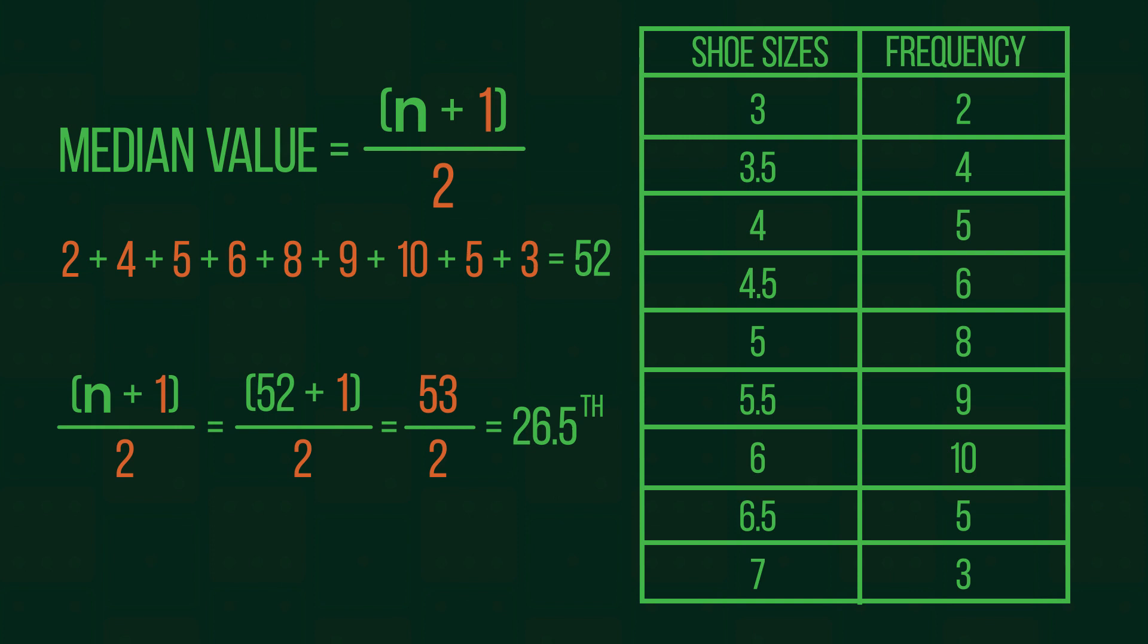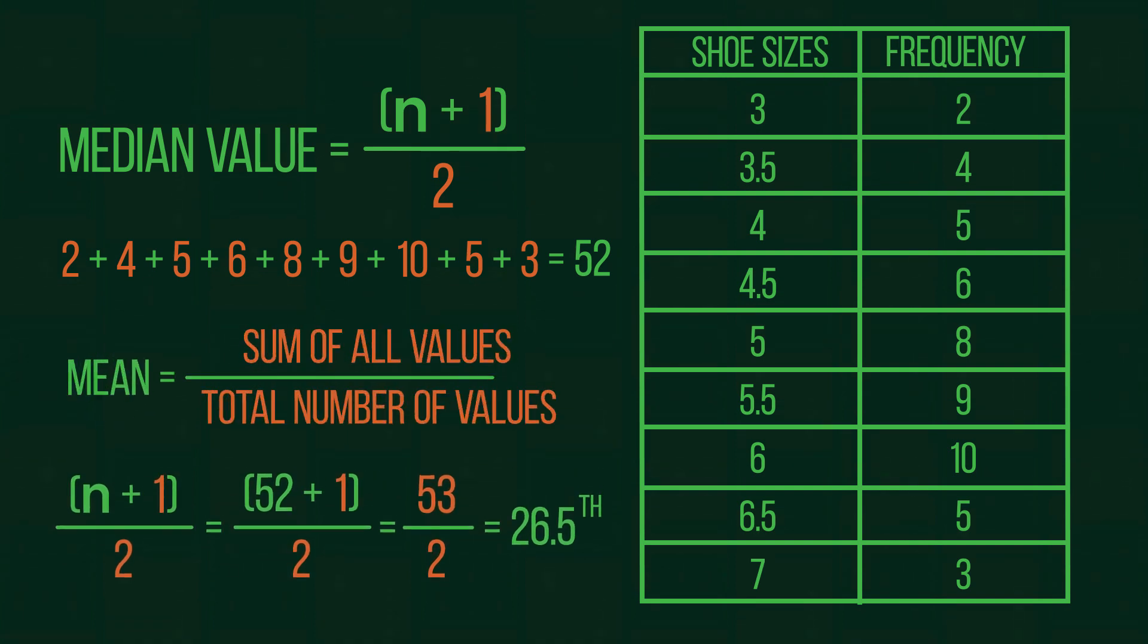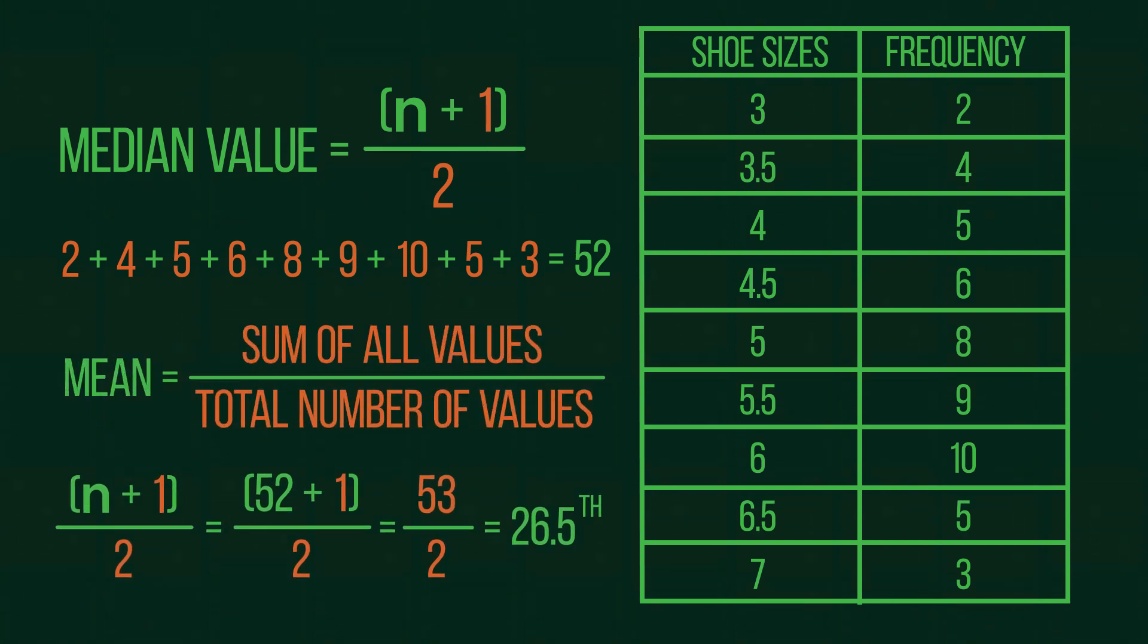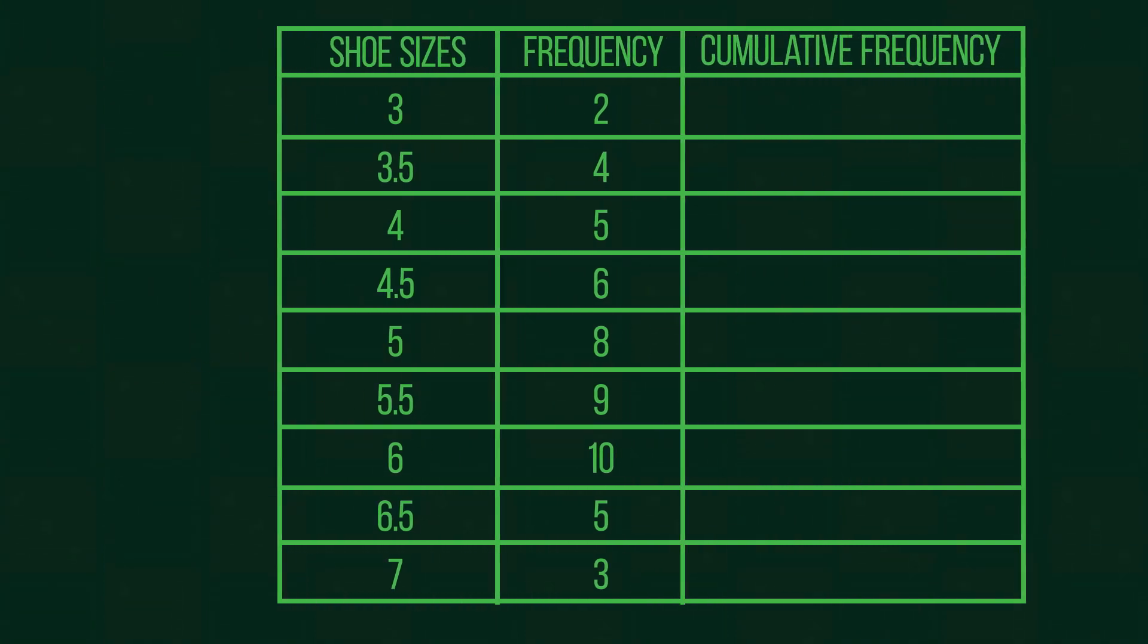We are able to find the 0.5th value by taking the value that would sit between the 26th and 27th positions. We do this by finding the mean of these values.